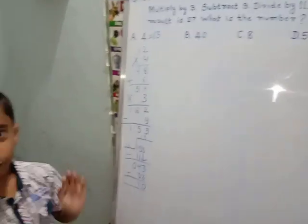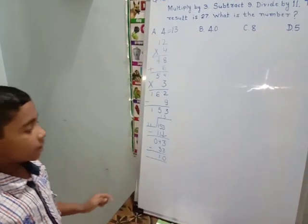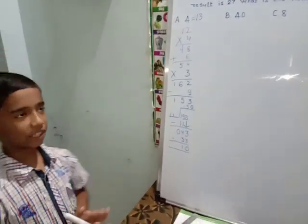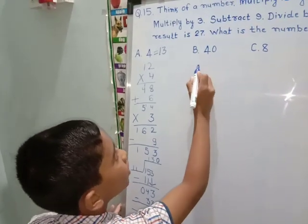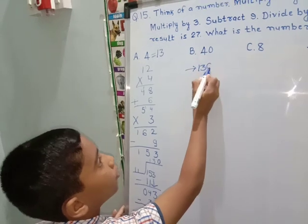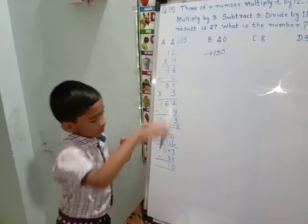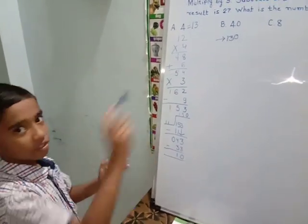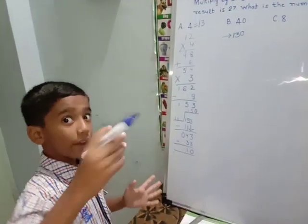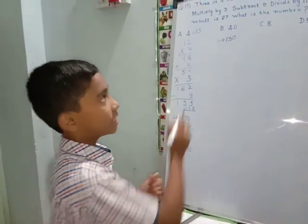Now we test option B, which is 40. Since we just added a zero to 4, the result will also have an extra zero — giving 130. So option B gives 130, which is also wrong. Option C is not in the 100s range, so we check option C next.